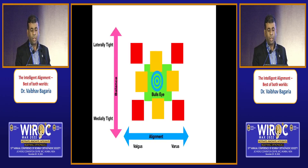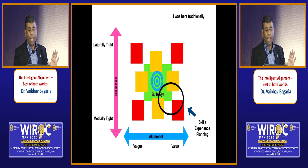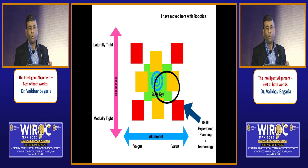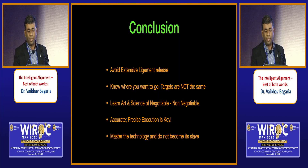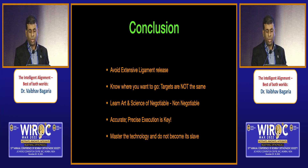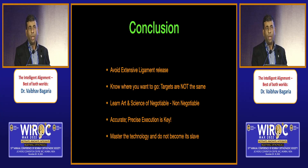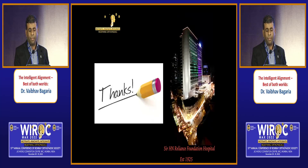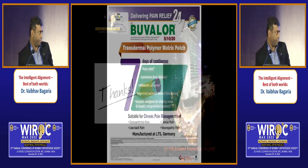In summary, we need to identify the bullseye. With skill and experience, I've moved from being slightly varus and slightly tight medially to being more closer to bull's eye with technology, although there is still some tightness for most of my varus knees. In conclusion: we must avoid extensive ligament release today; know that targets are not the same for all patients; learn the art and science of negotiables and non-negotiables; and execute with precision using robotic technology. We must master the technology and not become its slave.